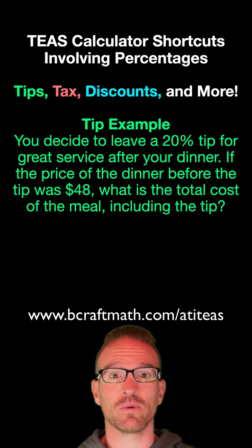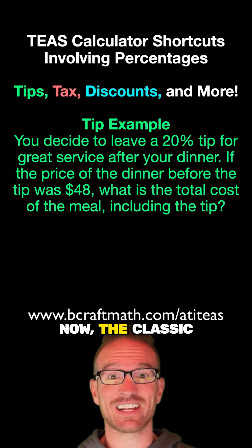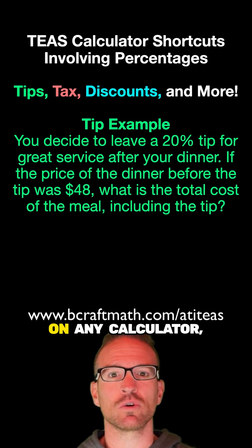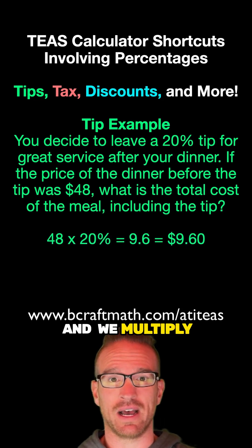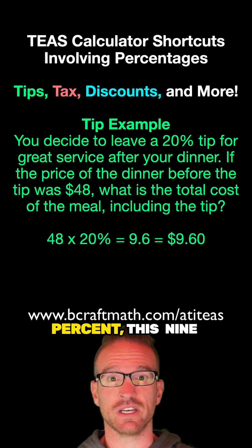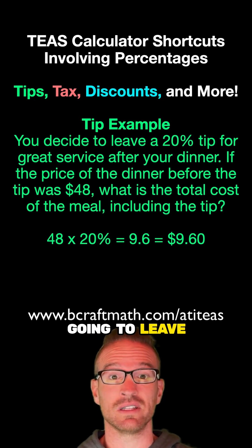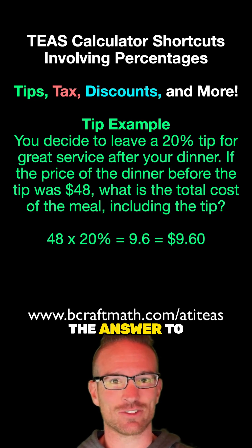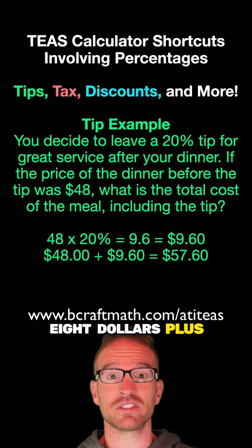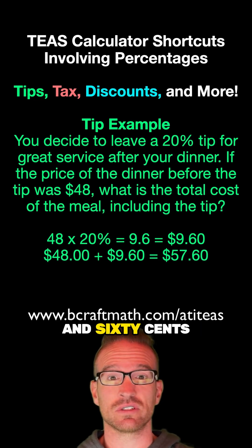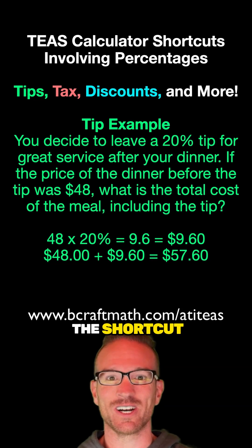Take this first example. The correct answer to this question is $57.60. Now, the classic way that works on any calculator: if we take the $48 and multiply it by 20%, this $9.60 represents the tip that we're going to leave. This is not the answer to our question, though — the total cost of the meal. We want to take the $48 plus the $9.60, and that's the $57.60.